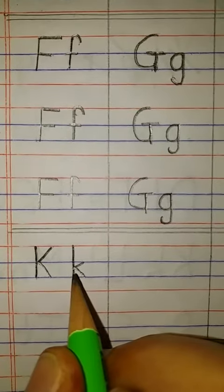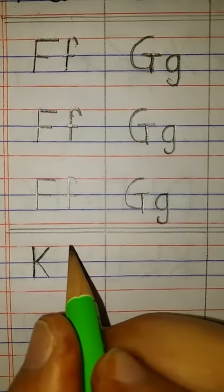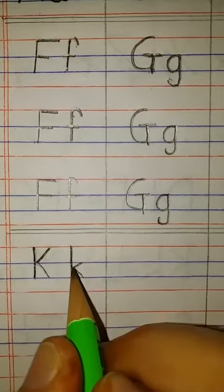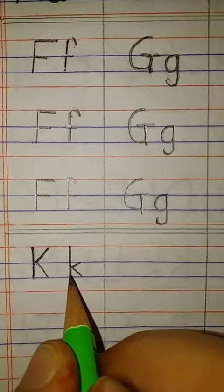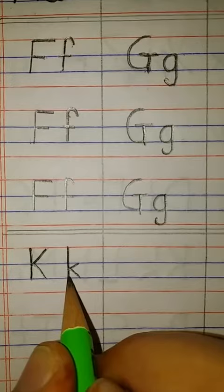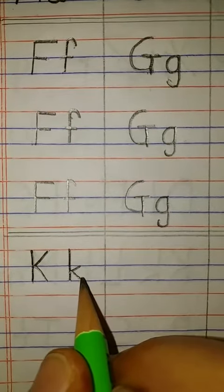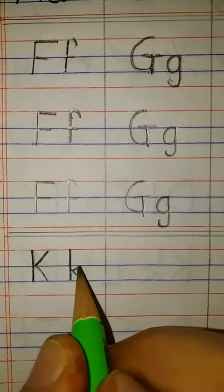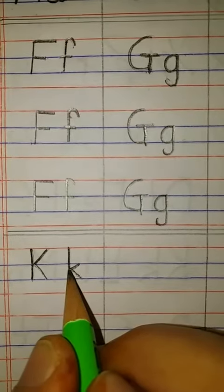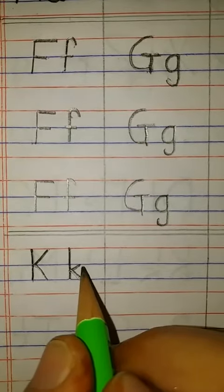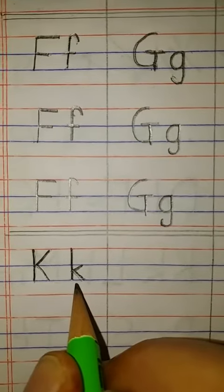For small letter k, again you have to draw a standing line. And then you have to draw a slanting line, but it should be between the first blue line and the second blue line. So you have to draw two slanting lines between these two blue lines. So this is small k.